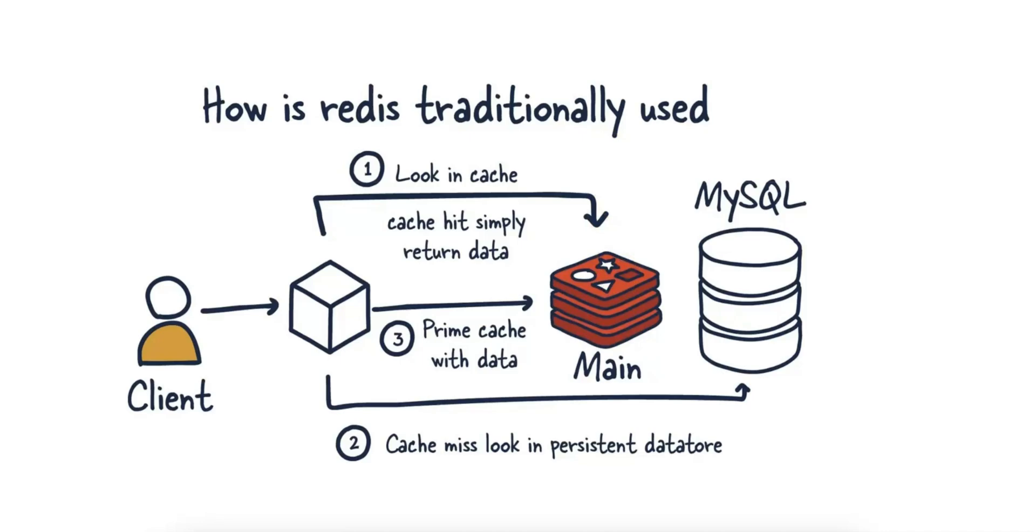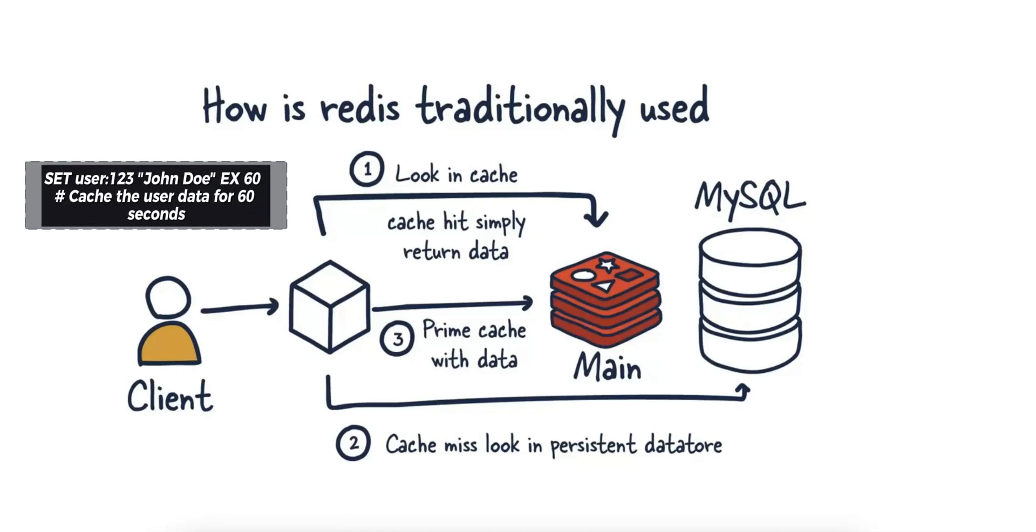There is also a concept of cache expiration and eviction. To ensure that the data in Redis stays up to date, Redis supports expiration for keys. This way, if data is frequently updated in MySQL, the cache can expire old entries and refetch fresh data from MySQL. You can set up an expiration time on a Redis key, after which it will be automatically removed, for example, caching a user profile for 60 seconds.